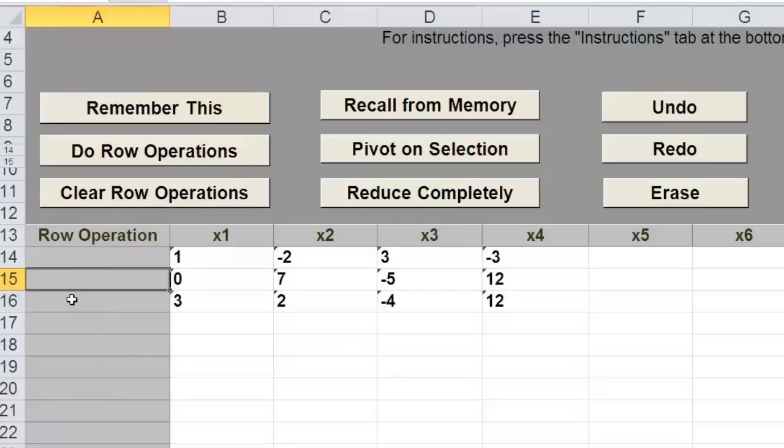I now can clear that row operations. I want to accomplish the same thing on row 3. So I'll take the elements in row 3 and subtract from it 3 times row 1. Let's see if I entered that row operation correctly. I will do that row operation. And sure enough, I got what I wanted.